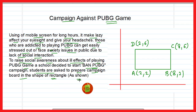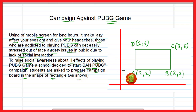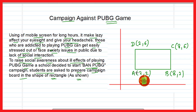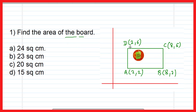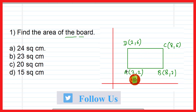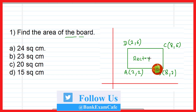Answer the following questions. Friends, a school runs a PUBG game ban campaign and the teacher asks the student to make a board, shown in a rectangular form whose coordinates of the four vertices are given, and you have to answer the following questions. The first question is: find the area of the board. Here ABCD is the board and you have to find the area of the rectangle.